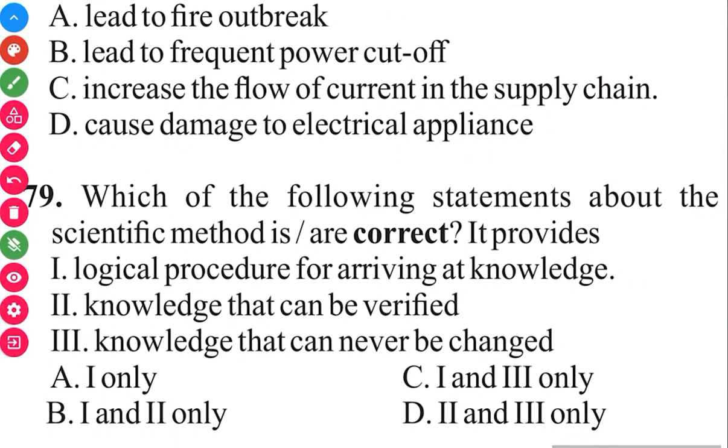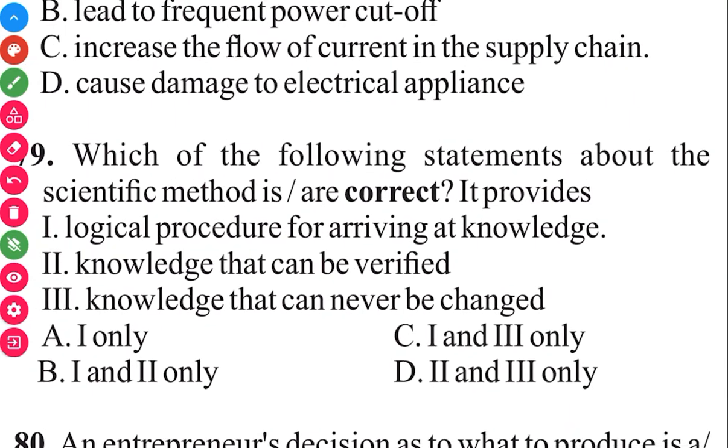Question 79. Which of the following statements about scientific methods is or are correct? It provides logical procedure for arriving at knowledge, knowledge that can be verified, knowledge that can never be changed. 79 in 3, 2, 1. So it can give you logical procedure for arriving at knowledge, knowledge that can be verified. So 79, the answer is B. Science is, knowledge of science is prone to change. Answer is proof.